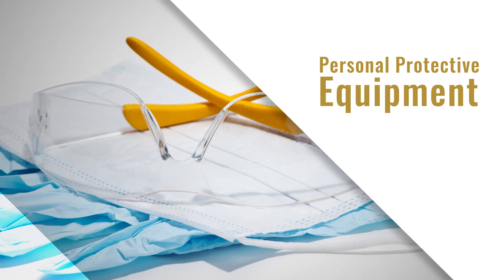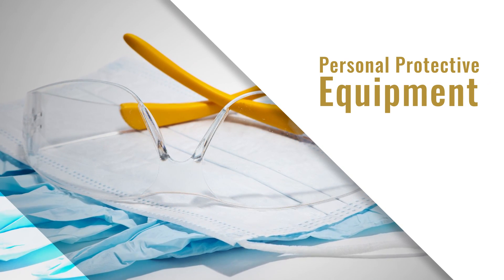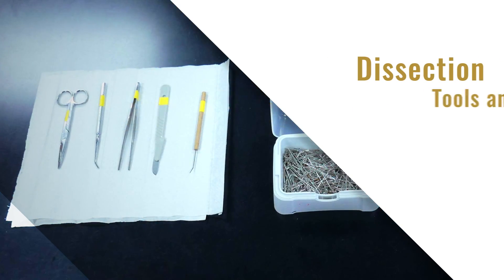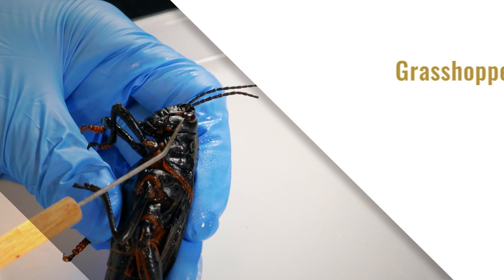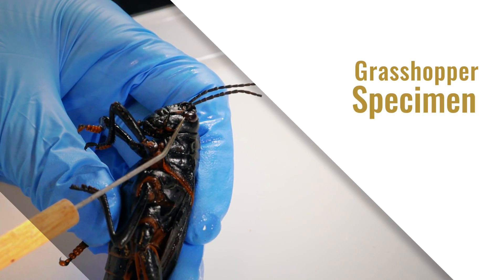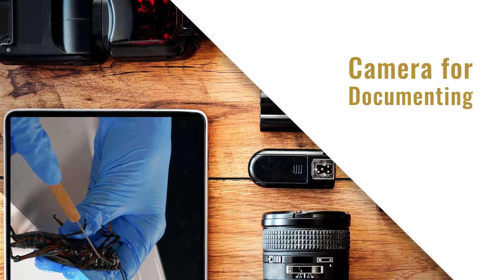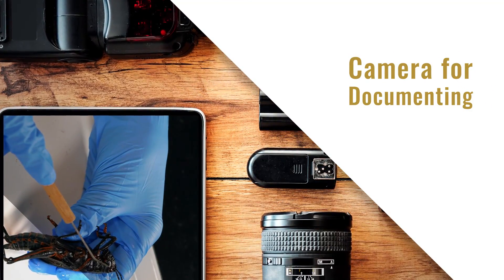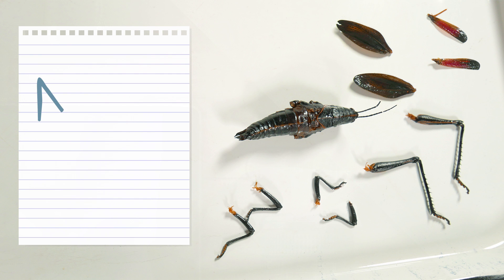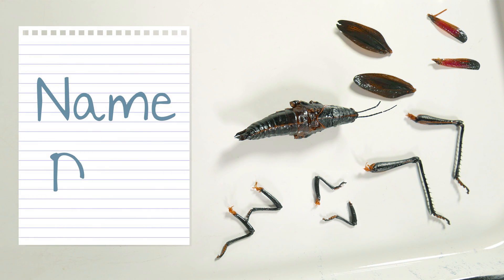To complete this lab, you'll need the following materials: personal protective equipment, dissection tools and pan, a grasshopper specimen, and a camera for documenting your work. Before you begin, place a small but legible piece of paper with your name and the date of the dissection to be included with any images taken of your specimen.